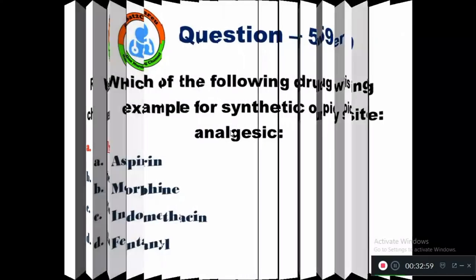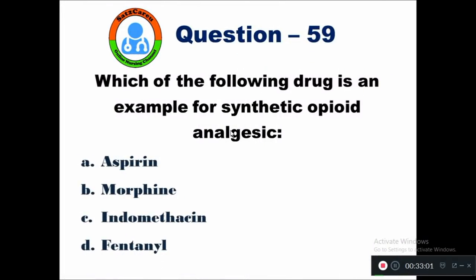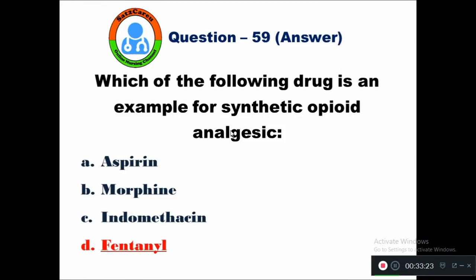Question 59: Which of the following drugs is an example of a synthetic opioid analgesic? Option A aspirin, B morphine, C indomethacin, D fentanyl. Fentanyl is the best example of a synthetic opioid analgesic.